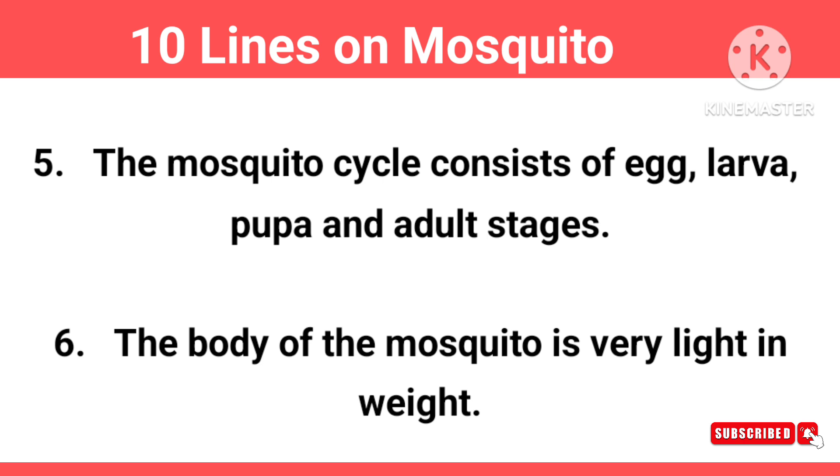The mosquito life cycle consists of egg, larvae, pupae and adult stages.